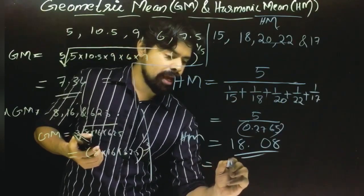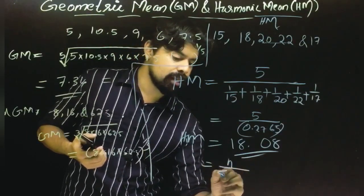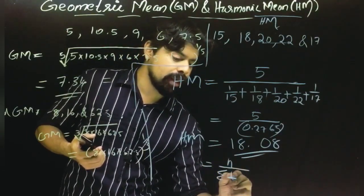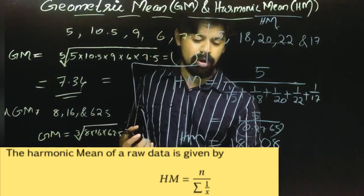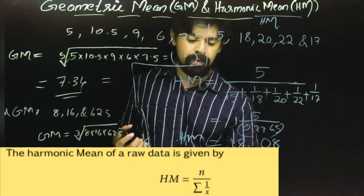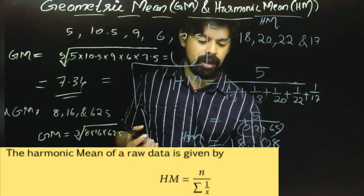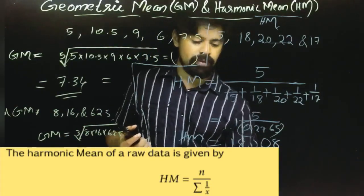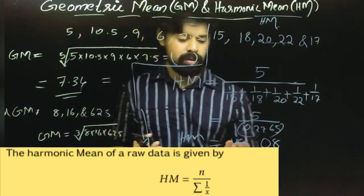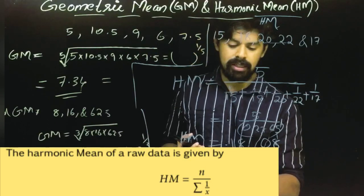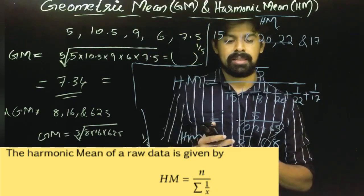The harmonic mean formula is: HM = n divided by sigma(1/x), where n is the number of observations and sigma(1/x) is the sum of the reciprocals of all data values.